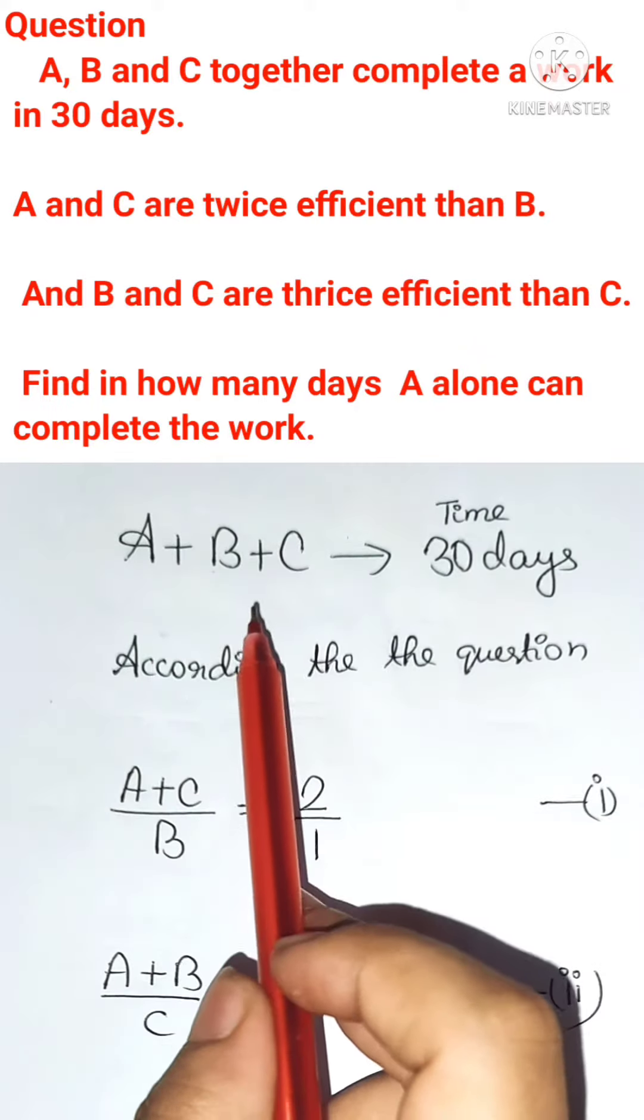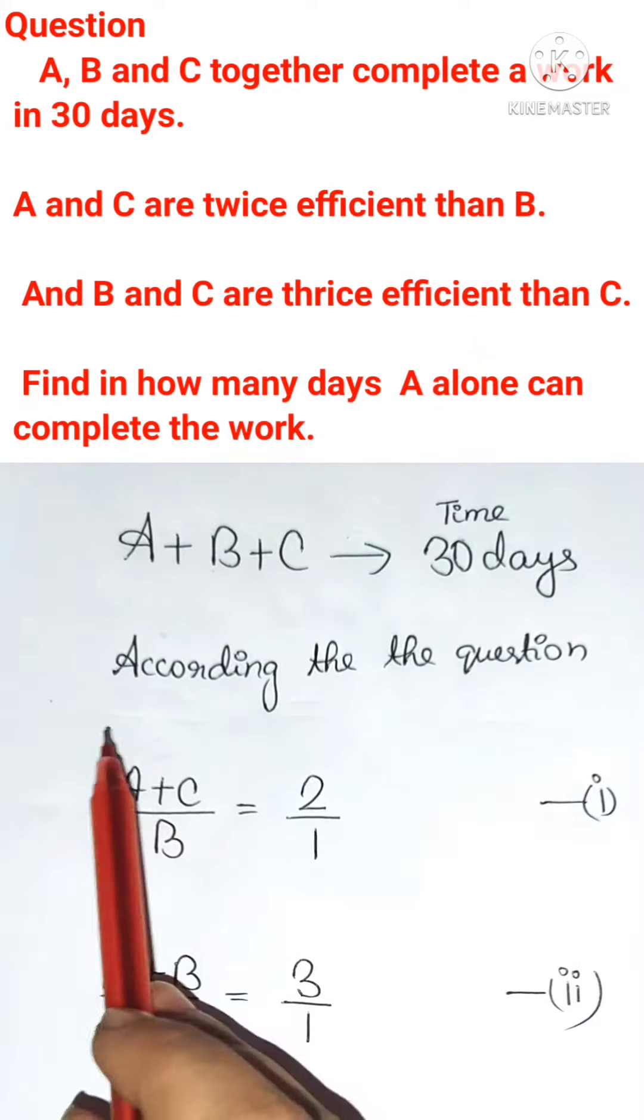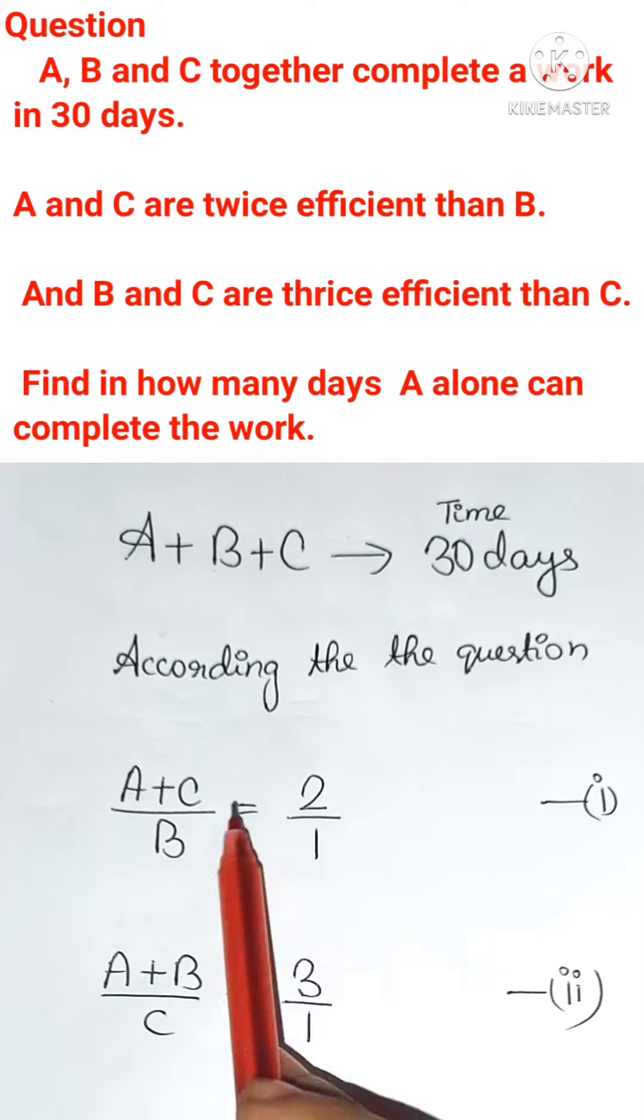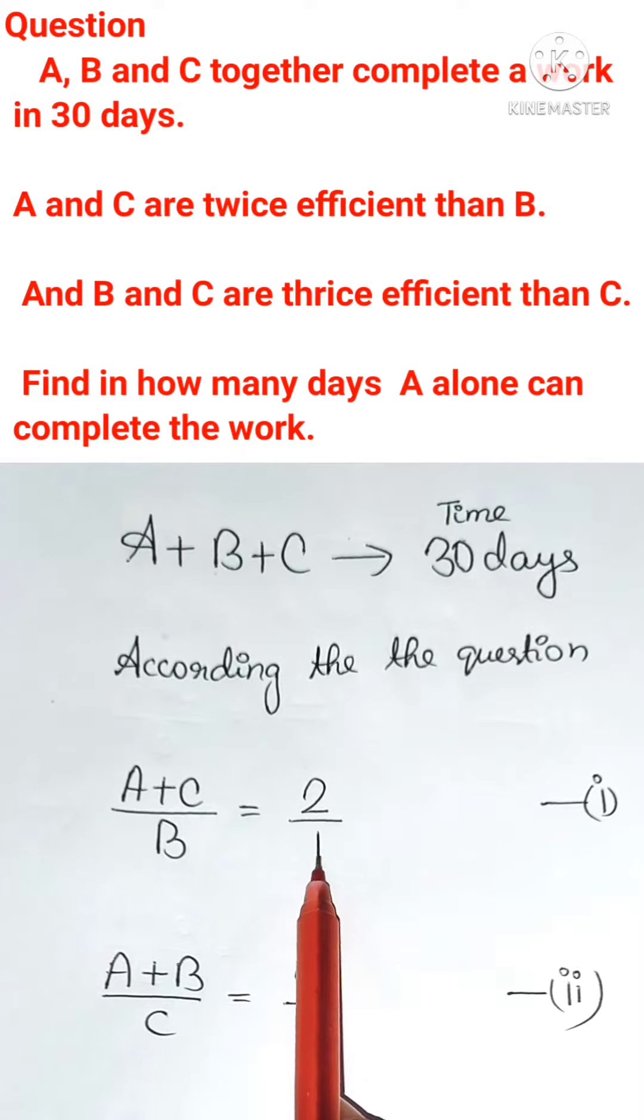So here in the question it is given A, B and C together can complete the work in 30 days and according to the question it is given A and C together can do twice work of B. So here in front of A and C I am keeping 2 and in front of B I am keeping 1.